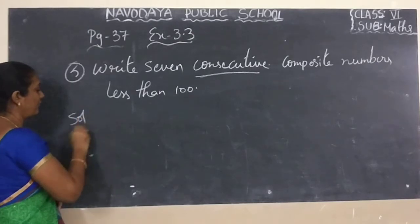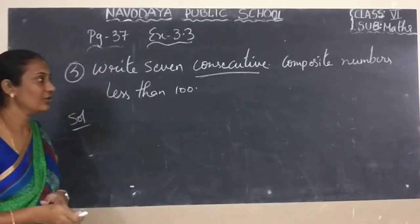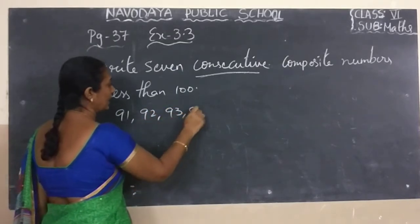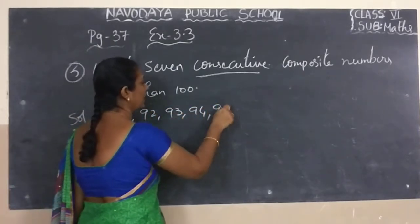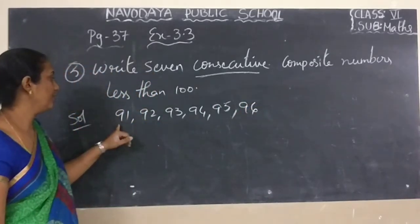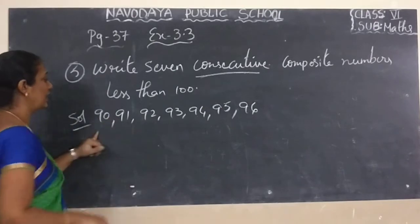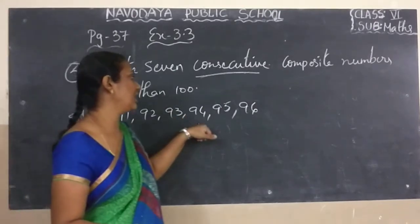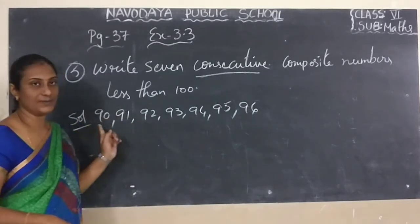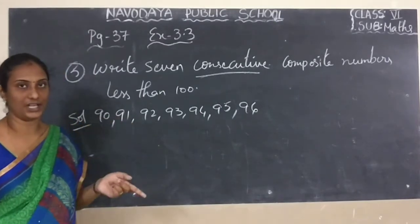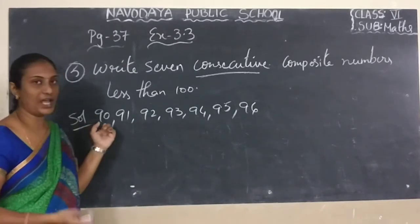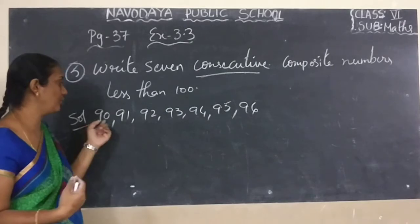For those, less than 100, we have to write. See now: 90, 91, 92, 93, 94, 95, 96. Total 7 numbers we got. 90 is divisible by the 5 table, 10 table, and 2 table also — means for 90 we are having more than two factors, so it is a composite number. 91: in the 7 table it is divisible, so it is also having more than two factors.